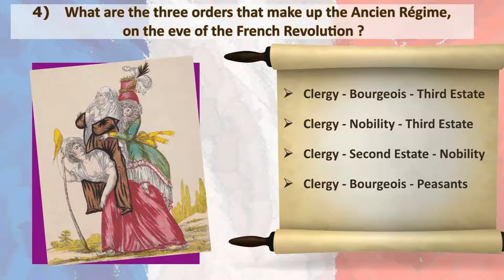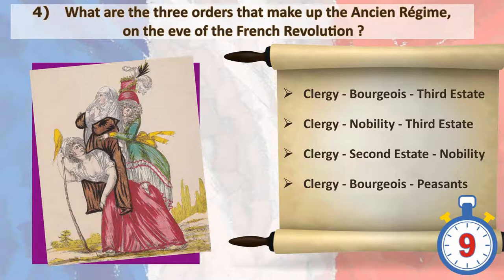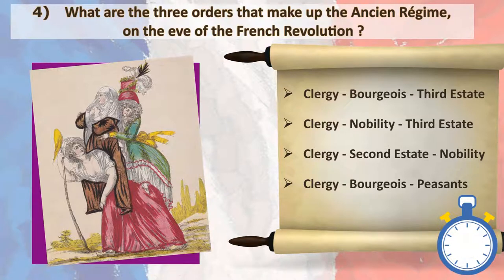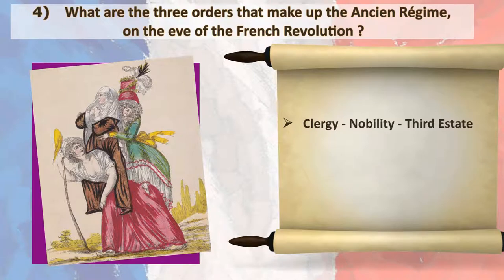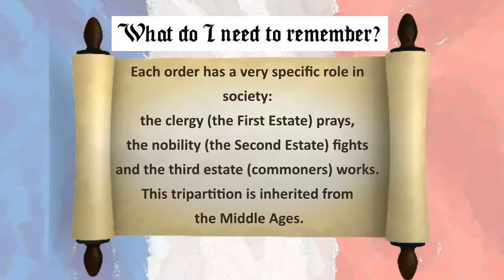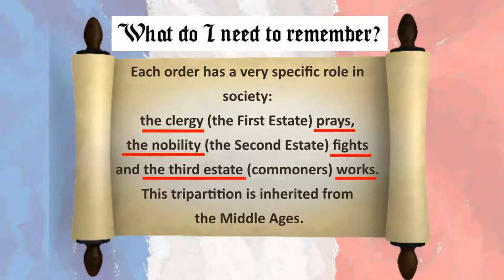What are the three orders that make up the Ancien Régime on the eve of the French Revolution? Clergy, nobility, third estate. Each order has a very specific role in society: the clergy, the first estate, prays; the nobility, the second estate, fights; and the third estate, commoners, works. This tripartition is inherited from the Middle Ages.